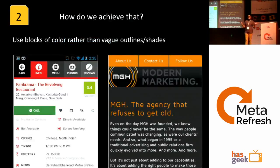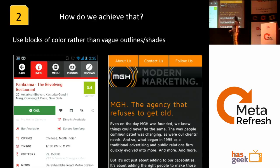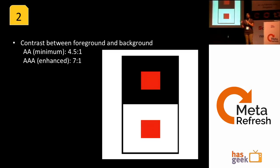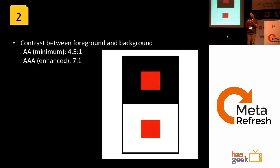So, use blocks of color rather than vague outlines and shades. The background and foreground contrast should be at least 4.5:1, and 7:1 for greater accessibility. There are online checking tools where you can input your color values and verify how well your application handles contrast.